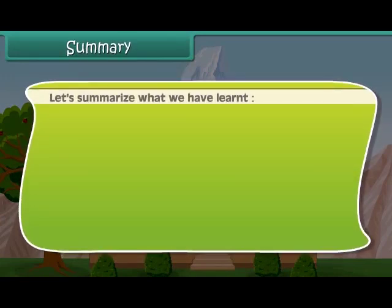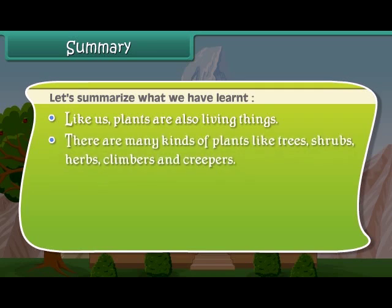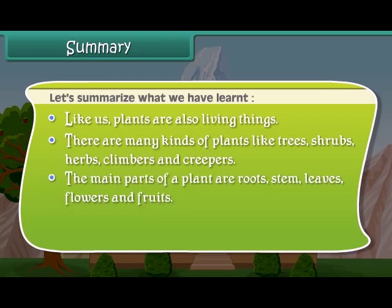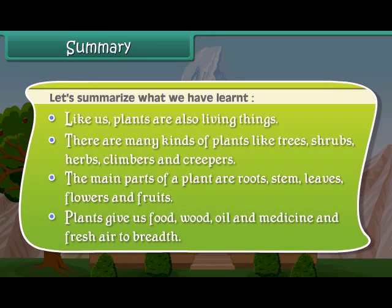Now friends, let us summarize what we have learned so far. Like us, plants are also living things. There are many kinds of plants like trees, shrubs, herbs, climbers, and creepers. The main parts of a plant are roots, stem, leaves, flowers, and fruits. Plants give us food, wood, oil, medicine, and fresh air to breathe.